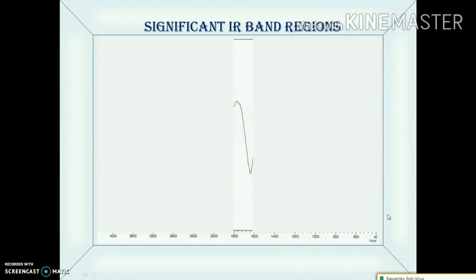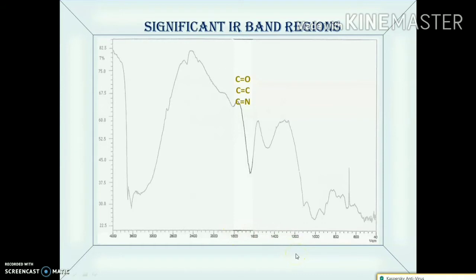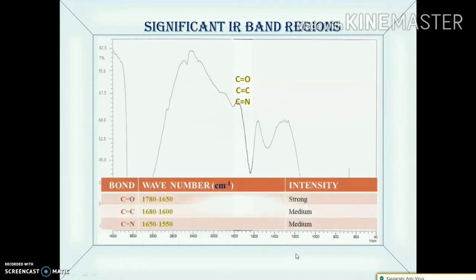The second part of the IR spectrum we will study lies from 1600 to 1800 centimeter inverse. This region belongs to double bonds present in the molecule. Whenever a double bond is present — whether between two carbon atoms, between carbon and oxygen, or carbon and nitrogen — it will give rise to a band in the IR spectrum. To locate it, search in the region from 1600 to 1800 centimeter inverse, which we label as the double bond region.